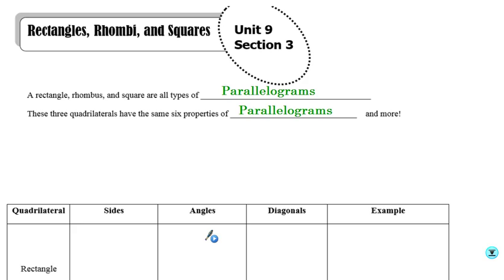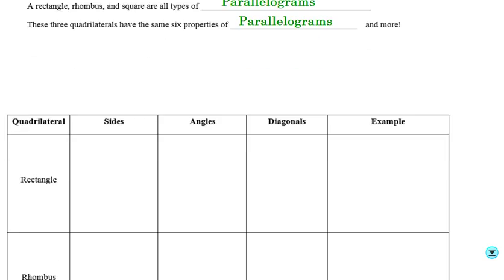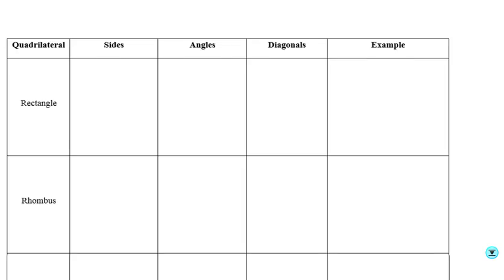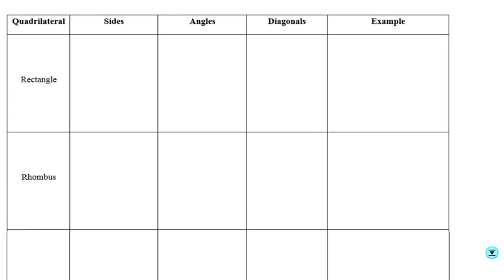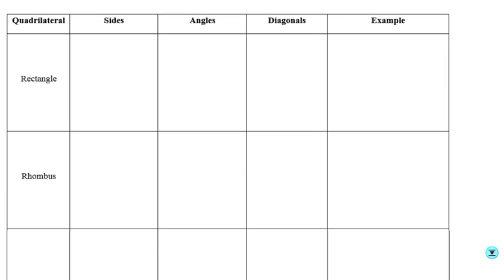They have all of the same properties of parallelograms — things like opposite sides congruent, opposite angles congruent. All of those properties we talked about in section 2 relate to a rectangle, a rhombus, and a square as well. In addition to those six properties, we also have some new properties that we're going to look at that you need to learn and know.